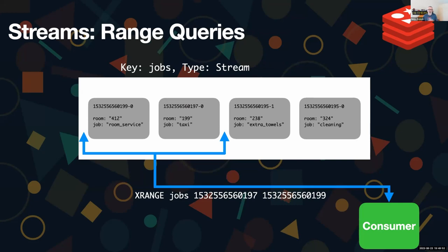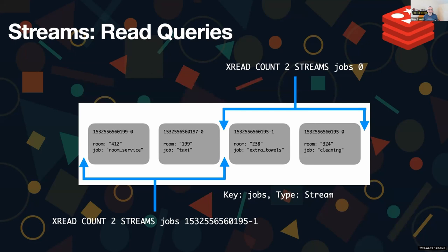There are a couple of ways to get stuff out of the stream. We can ask it for a range of IDs - and because IDs are timestamps, that's a range of time. So we can say 'what happened between these two times?' and it will come back and tell us. If we ask what happened between the timestamp ending 197 and 199, we'll get those two items. We don't need to worry about the sequence number on the end - the database will handle that. We'll be told that at that point, room 412 wanted room service and room 199 wanted a taxi.